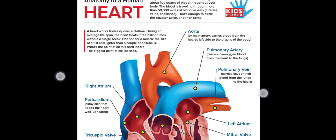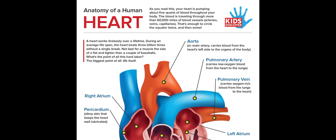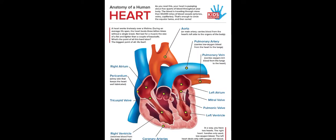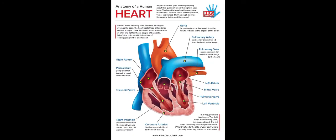Hello everyone, today we are going to look at the anatomy of a human heart. The function of the heart is to pump blood to all parts of the body. Here we have a diagram showing the heart. As you can see, we have different veins and arteries — we have the aorta, the pulmonary artery, the pulmonary vein, and what we call the vena cava.